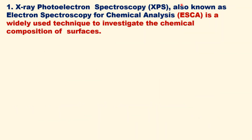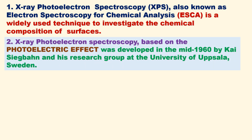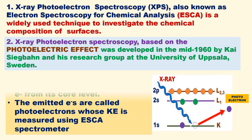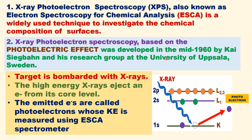X-ray photoelectron spectroscopy is also known as ESCA. It is a widely used technique to study the chemical composition of surfaces. XPS is based on the photoelectric effect. It was developed in the mid-1960s by Kai Siegbahn and his research team at the University of Uppsala in Sweden. In XPS, X-rays are allowed to fall on the sample target, and the high energy X-rays eject an electron from its core K shell or 1s shell.